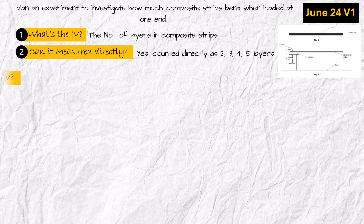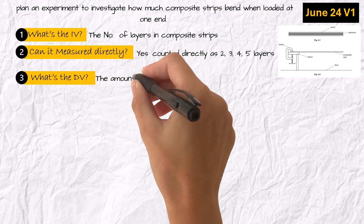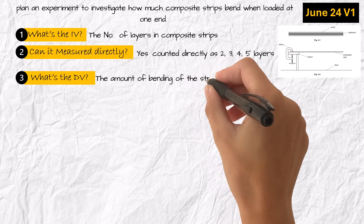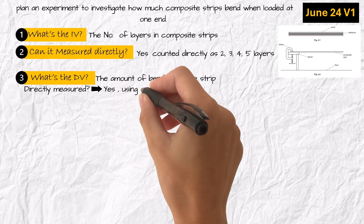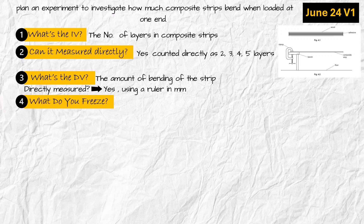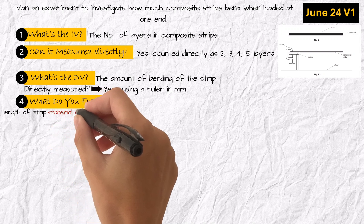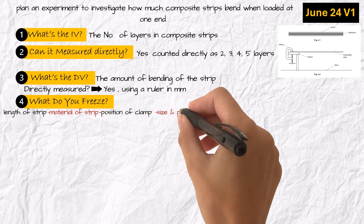Number three: what's the dependent variable? The amount of bending — deflection — of the strip. Is it directly measured? Yes, using a ruler in millimeters. Number four: what do you freeze? Write any two from the following: the length of the strip, the material of the strip, the position of the clamp, or the size and position of the load.